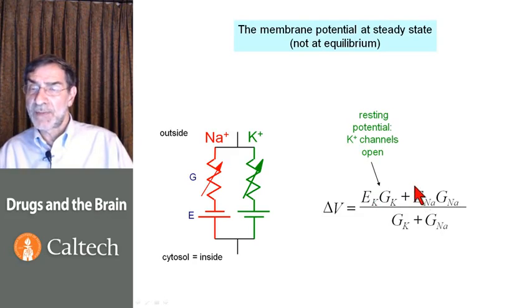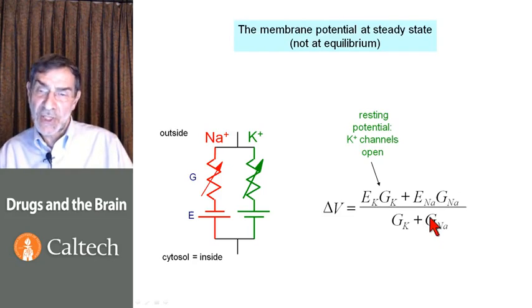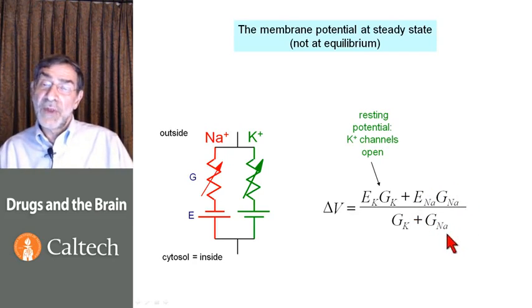But if sodium channels are open, and this happens during the action of drugs at postsynaptic membranes, then we have a membrane potential that becomes nearer to the sodium potential. This is how we can change the voltage across a biological membrane, how nature changes the voltage across a biological membrane with drugs that open ion channels.